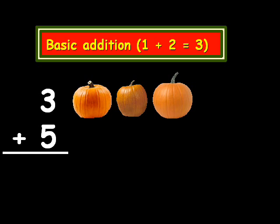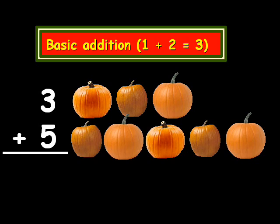Let's say we have 3 pumpkins, and we go to a pumpkin patch and we get 5 more pumpkins. So we are adding 5 pumpkins to the 3 pumpkins that we already have. And the question is, what does that equal to?